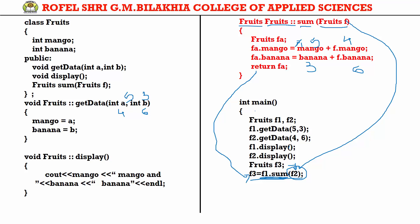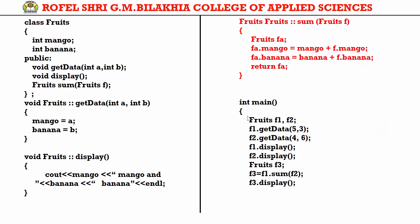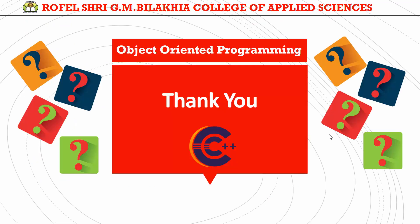Now we display the result with F3.display, and return 0. Hope you understand this program — this is a program of object as an argument and returning object. Today I explained object as an argument and returning object. If you have any query regarding this topic, you can message me. Thank you.